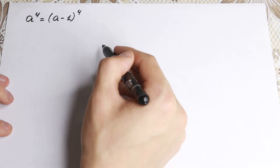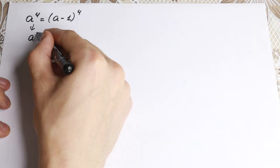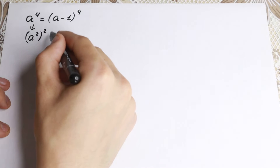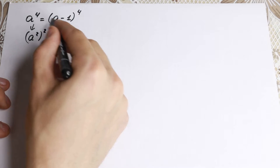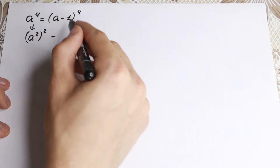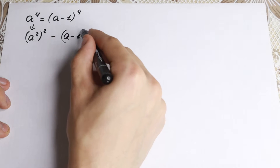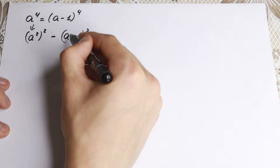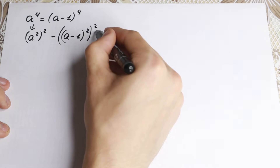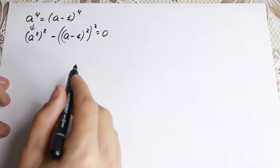Let's try to solve it. First, a to the fourth power is a really good power because we can write it as a-squared raised to the second power. Let's do this, and bring everything to the left-hand side, writing the right side the same way: (a minus one) squared, raised to the second power, equal to zero.